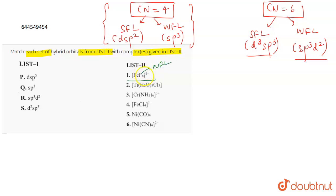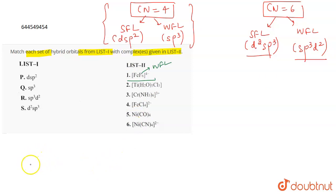The first complex is [FeF₆]⁴⁻. Fluorine is a weak field ligand, and this complex has six ligands, meaning it has coordination number six with a weak field ligand. Therefore, the hybridization is sp³d². So R is matching with 1, and it can match with more than one.